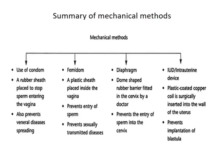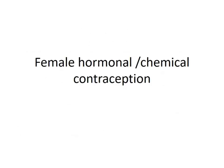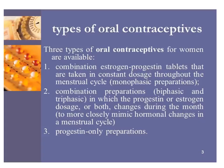Here is a summary of all the mechanisms of mechanical methods of contraception. Coming to hormonal or chemical contraception: these use estrogen and progesterone preparations. They can be oral, like pills, or non-oral, like injectables, IUDs, implants, rings, and patches. Three types of oral contraceptives are available: a combination of estrogen and progesterone constant throughout the cycle, a combination in which the doses are varied, or progesterone-only preparations.